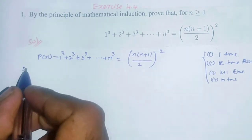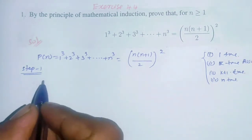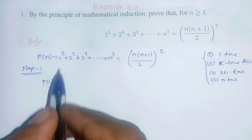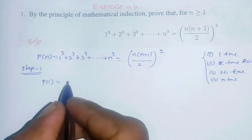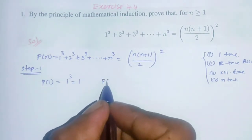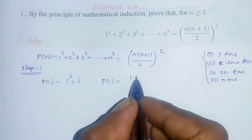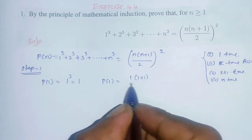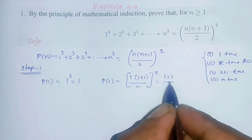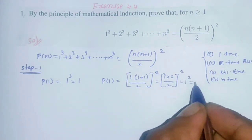Step 1: We will show P(1) is true. On the left-hand side, the first term is 1³ = 1. On the right-hand side, substituting n=1: 1×(1+1)/2, the whole squared = (2/2)² = 1² = 1. The left-hand side and right-hand side values are the same, so P(1) is true.